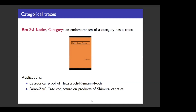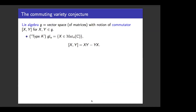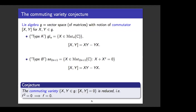I was asked to present an open problem, and I'll do that now. Recall that a Lie algebra G is a vector space — you can think of it as a space of matrices — which has a notion of commutator, or Lie bracket. For example, one type of Lie algebra is the algebra of n×n matrices whose bracket is the usual commutator of matrices — that's type A. There's also type B, which are odd-dimensional skew-symmetric matrices. The commuting variety conjecture predicts that if you take the commuting variety of pairs of elements in your Lie algebra whose commutator is zero, then this variety should be reduced — meaning if you find an equation of the form f²=0, you can also find f=0.